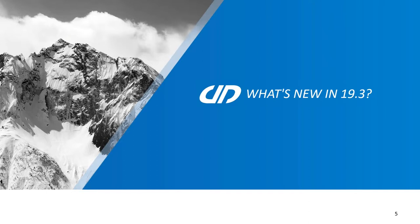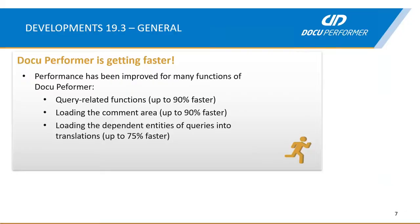Let's talk about improvements. What general improvements did we do? We made the DocuPerformer faster, working on performance in different areas. For example, all query related functions are now up to 19% faster. We also increased the performance in the comment areas — whenever you are opening a comment of an object it's now opening up to 90% faster. We've also worked on performance in the translation tool, where it's now 35% faster to load the dependent entities of queries.